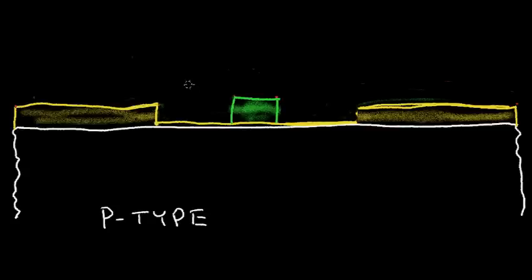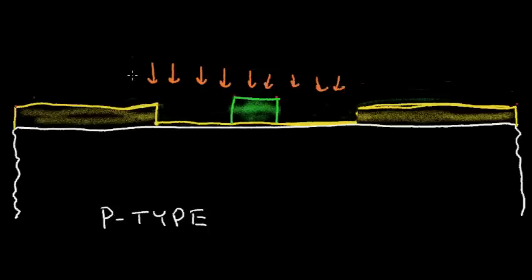Now let's do another fabrication step. I want to implant N-type material by shooting it over the surface of this wafer. The thick glass region will block the N-type dopant. It will also be blocked by the green polysilicon. So my N-type material will form the NMOS transistor source and drain regions.